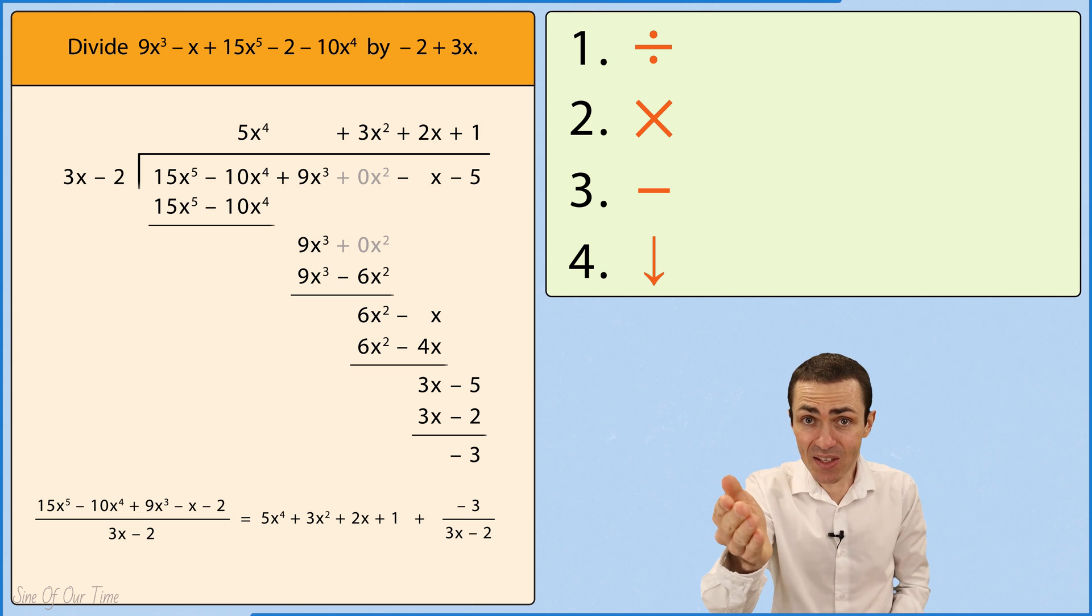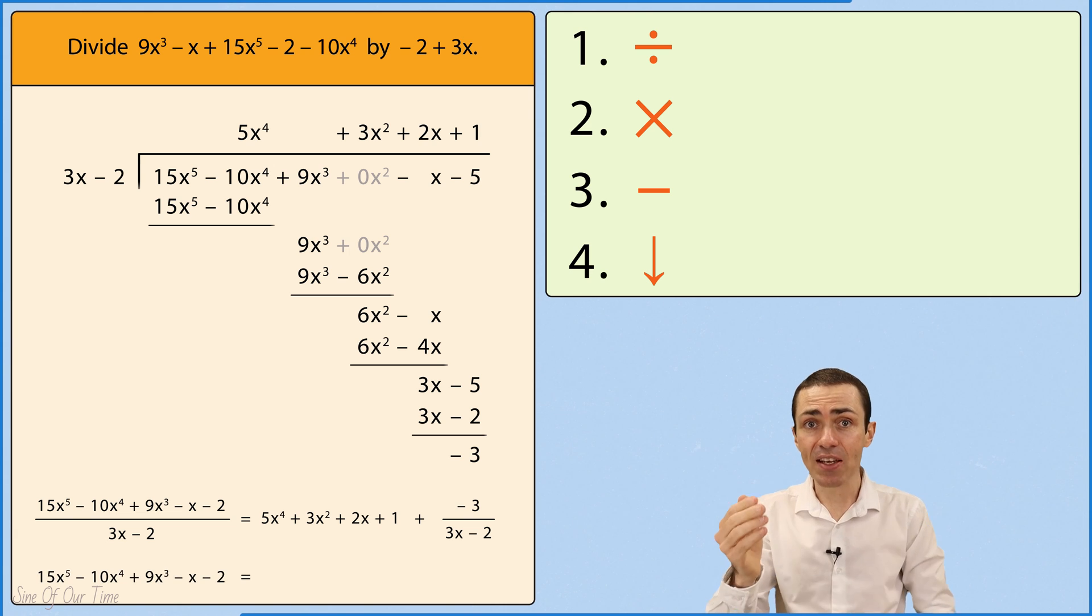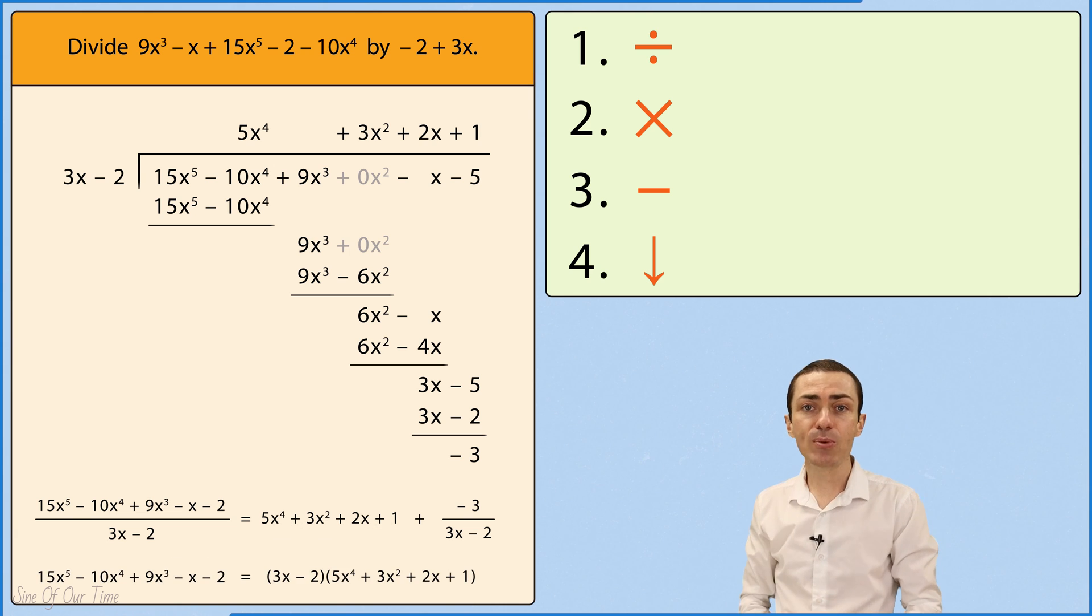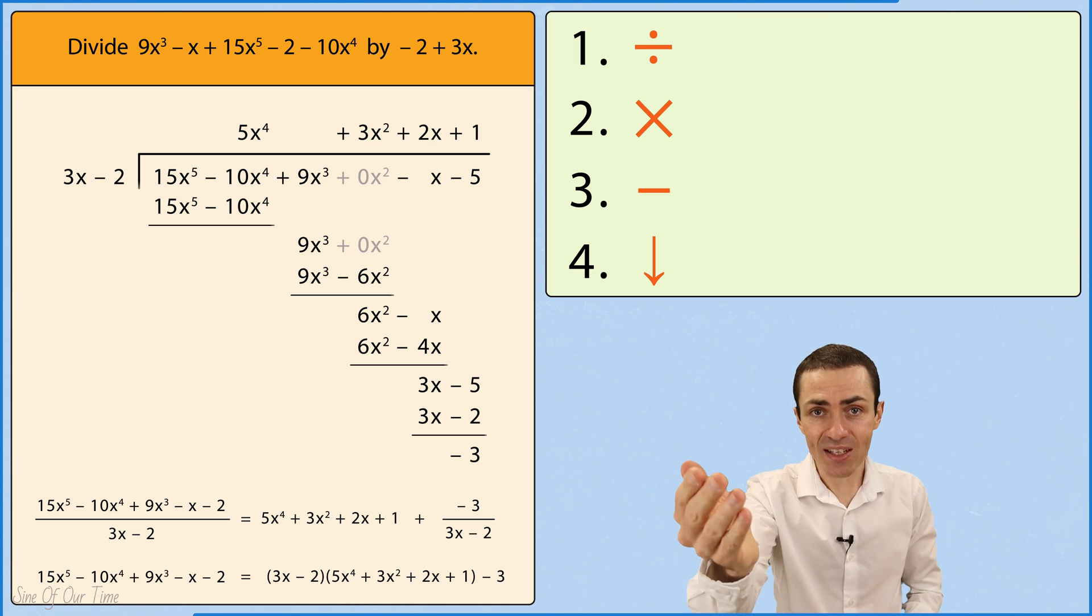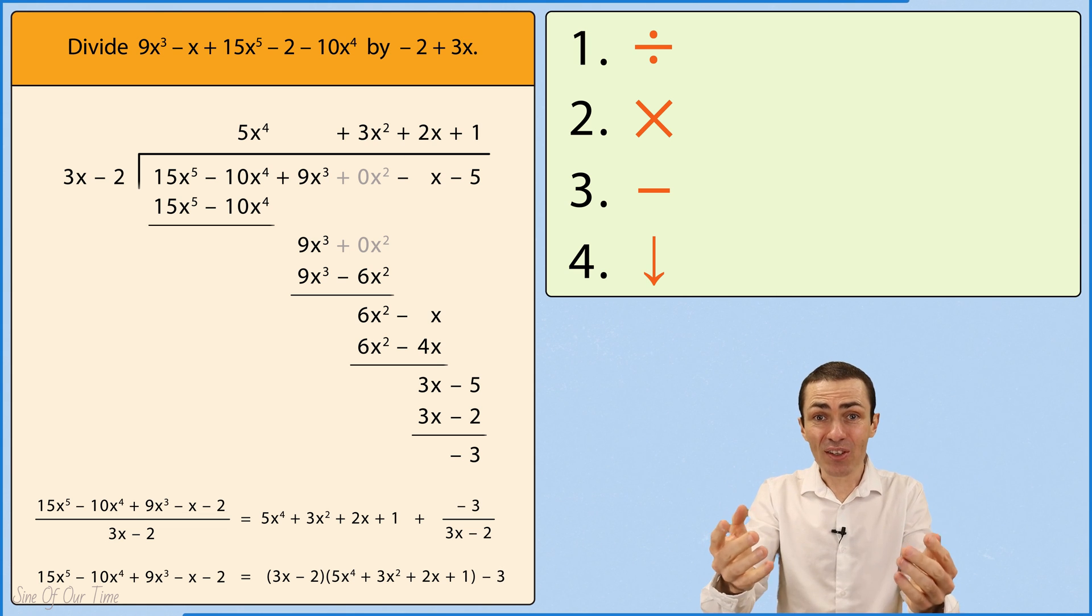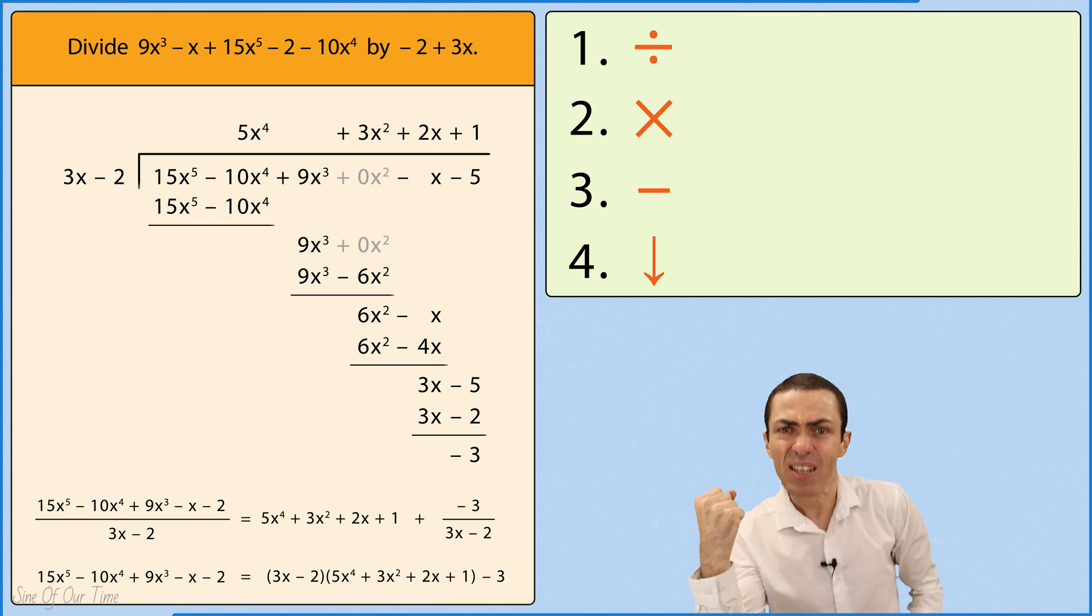In other words, we can take this dividend and we can write it as 3x minus 2 multiplied by 5x to the power of 4 plus 3x squared plus 2x plus 1 with the remainder of negative 3. And there we have it. This spicy problem is conquered.